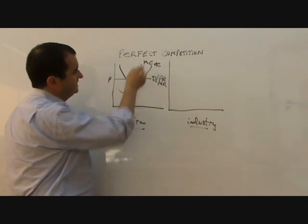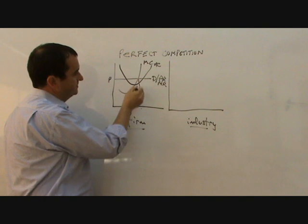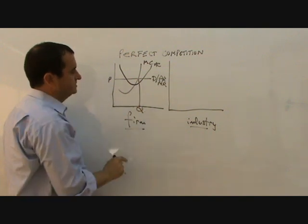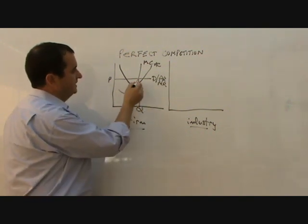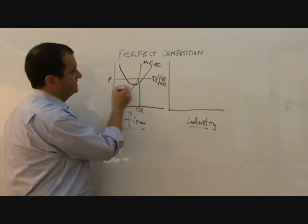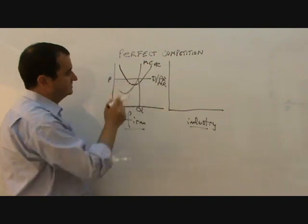we can see that at the MC MR point, here, is where they would produce. Quantity Q, charging price P. And the AC is there, the AR is there. They're making abnormal profits of this quantity.